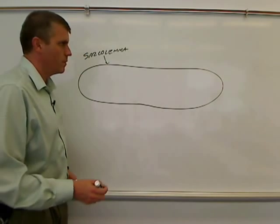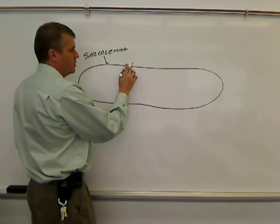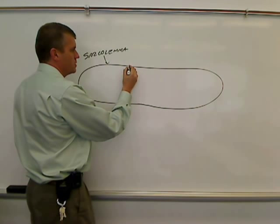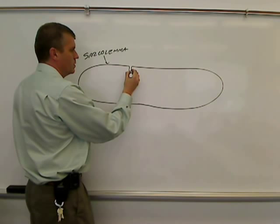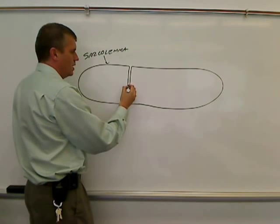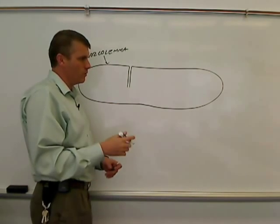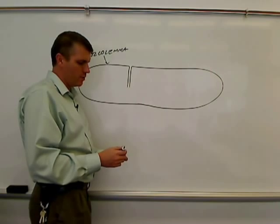The next thing that we need to know about are transverse tubules. A transverse tubule is an invagination of the cell's membrane, creating a tube that goes down through the cell. And these tubes don't go straight down through, they actually wrap around what we call myofibrils.